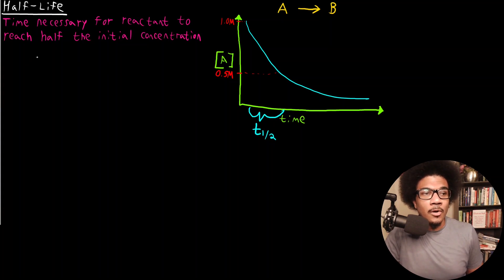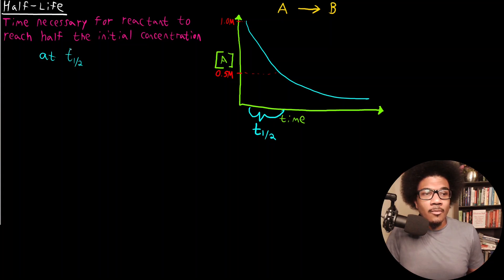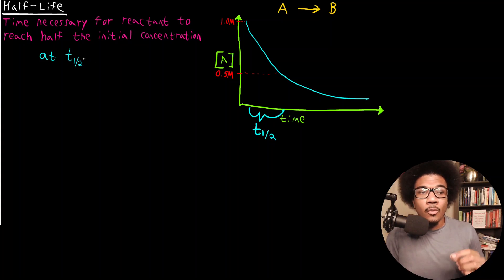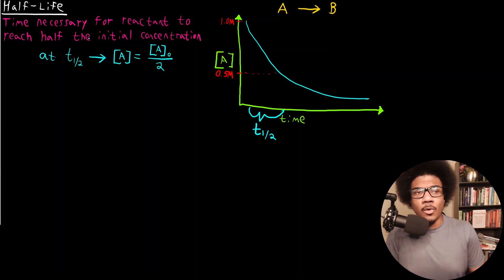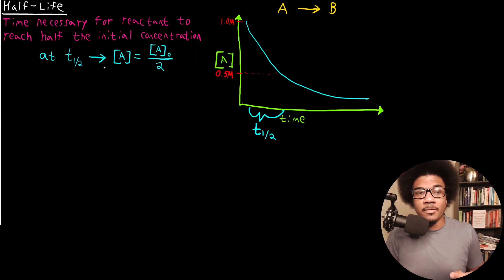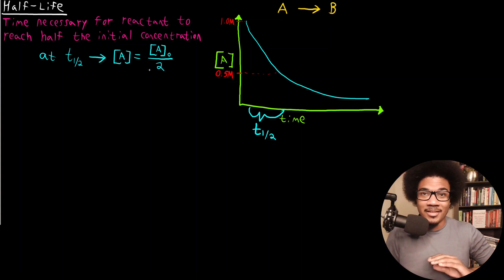What does this mean mathematically? We know that at T one-half, putting the definition into an equation, the following statement is true: the concentration of our reactant is going to be equal to half of the initial concentration — A-naught over two. All this is is just taking what we see in the chart and putting it into an equation. At T one-half, the current concentration of our reactant will be half of its initial concentration.